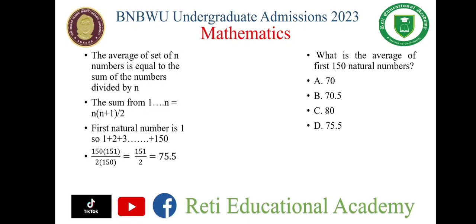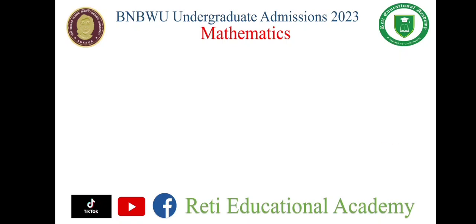The 150s cancel each other out, so we are left with 151 divided by 2. When we divide, it gives us 75.5. So the correct option is D.